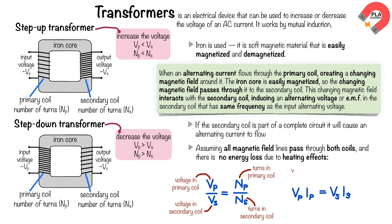Where Vp is the voltage in the primary coil, Ip is the current in the primary coil, Vs is the voltage in the secondary coil, and Is is the current in the secondary coil.